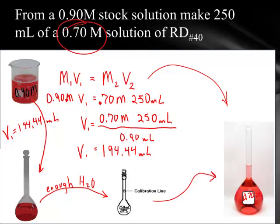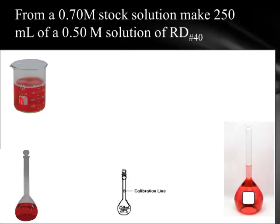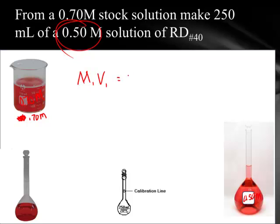Now let's look at one more example. In this one, I'm going to take this solution and pour it into this beaker. So I have here a 0.70 molar solution in this beaker. And I know that I want to make a 0.5 molar solution — that's what my next direction says — 0.5 moles per liter solution of red dye number 40. And I'm going to use this dilution equation: the concentration times the volume equals the concentration at the end times the volume at the end.